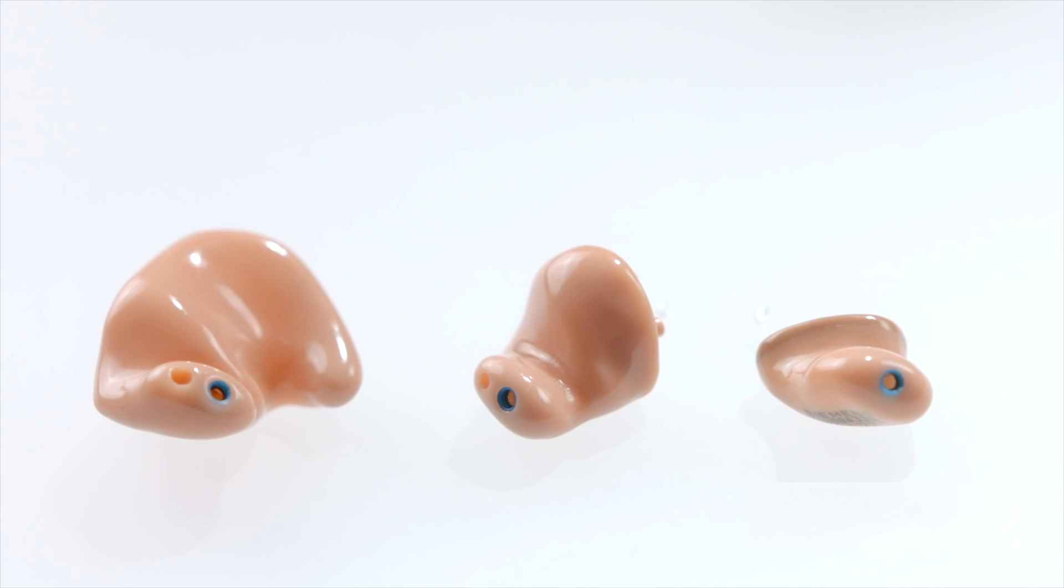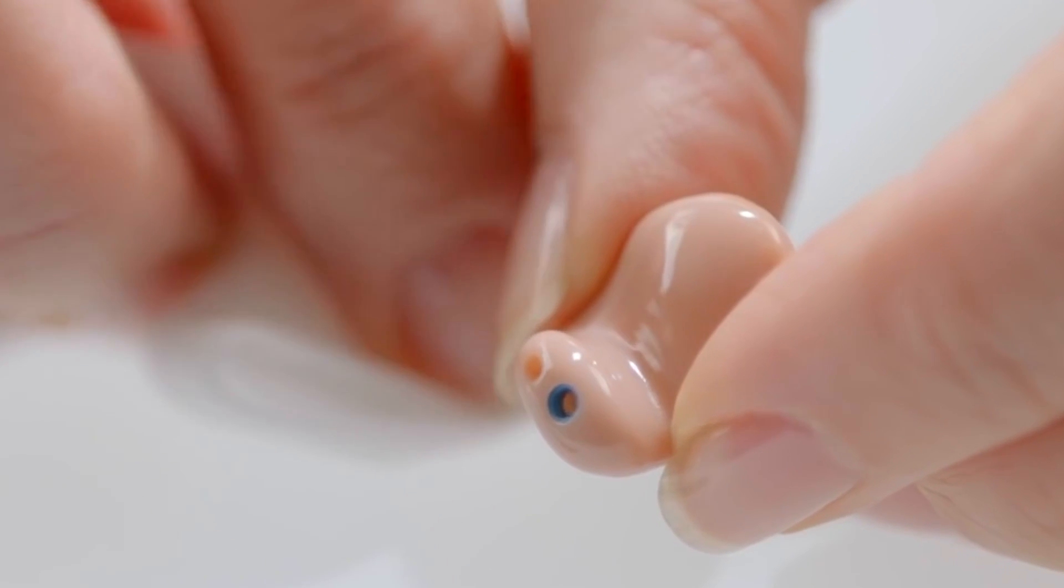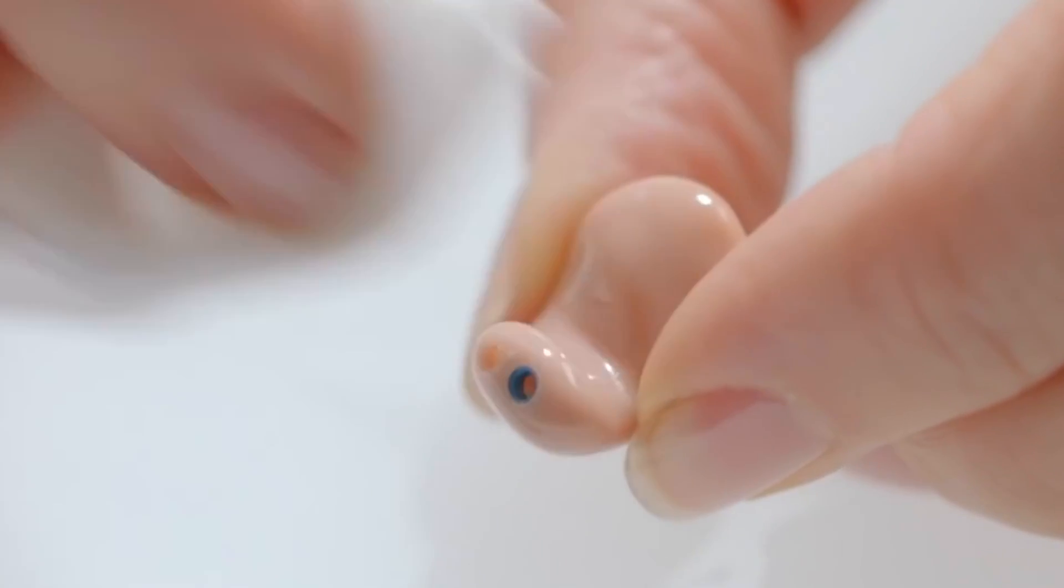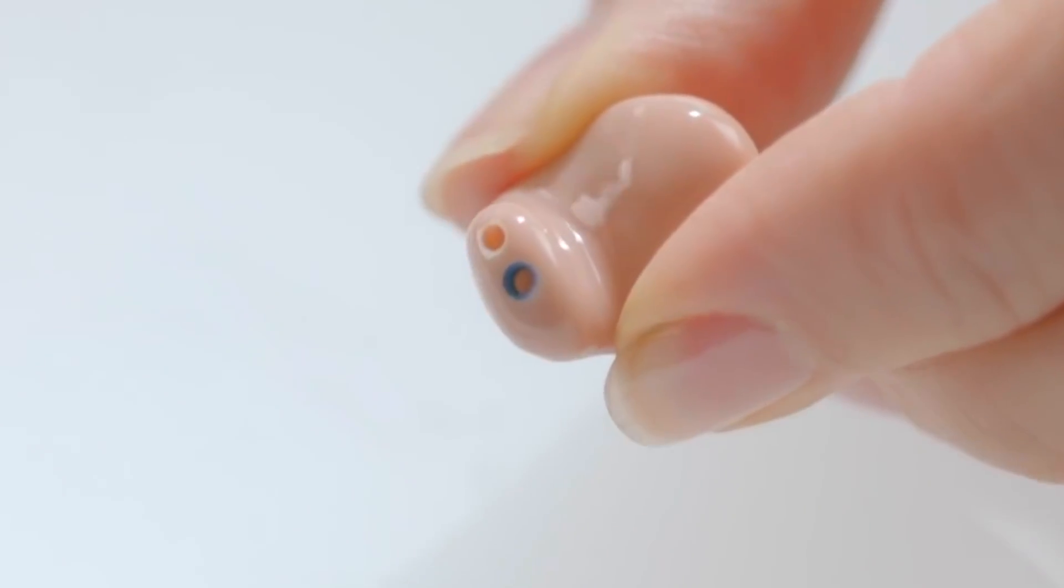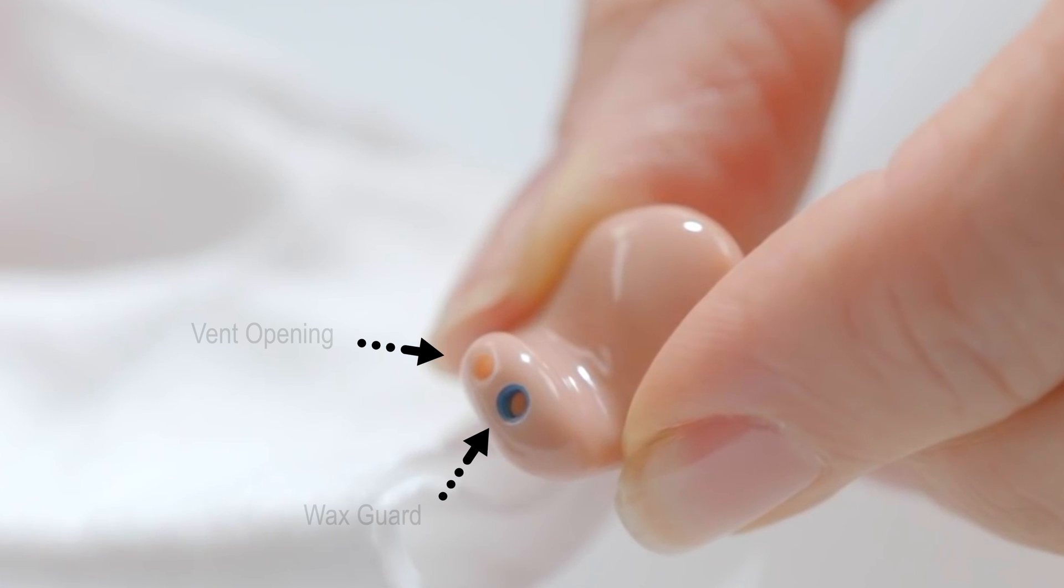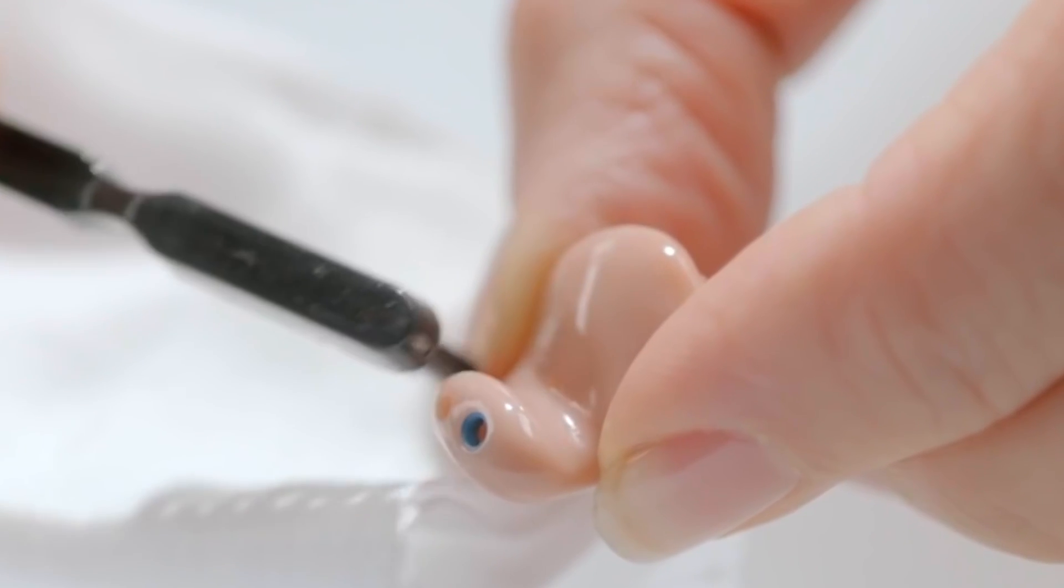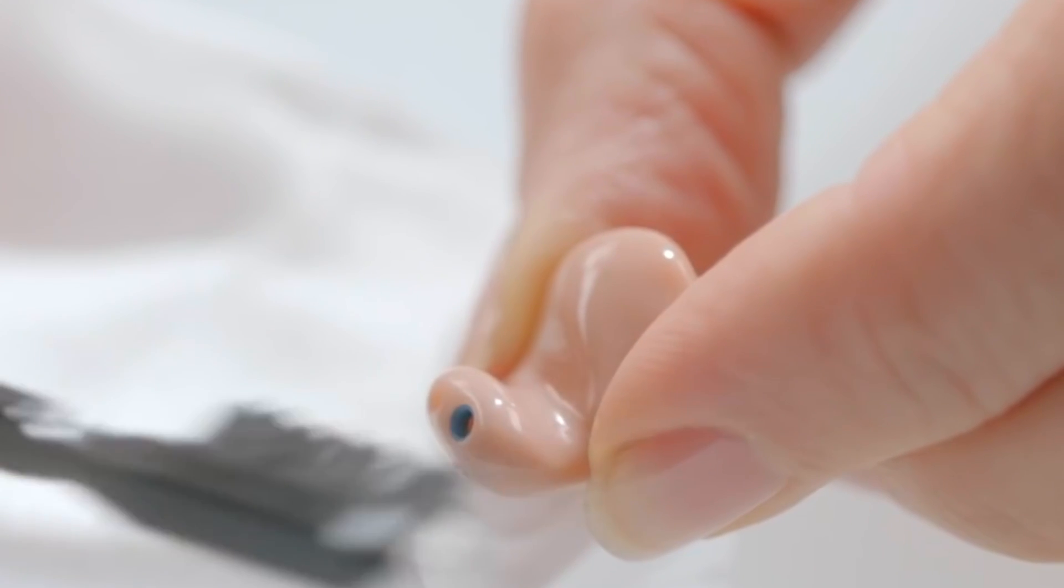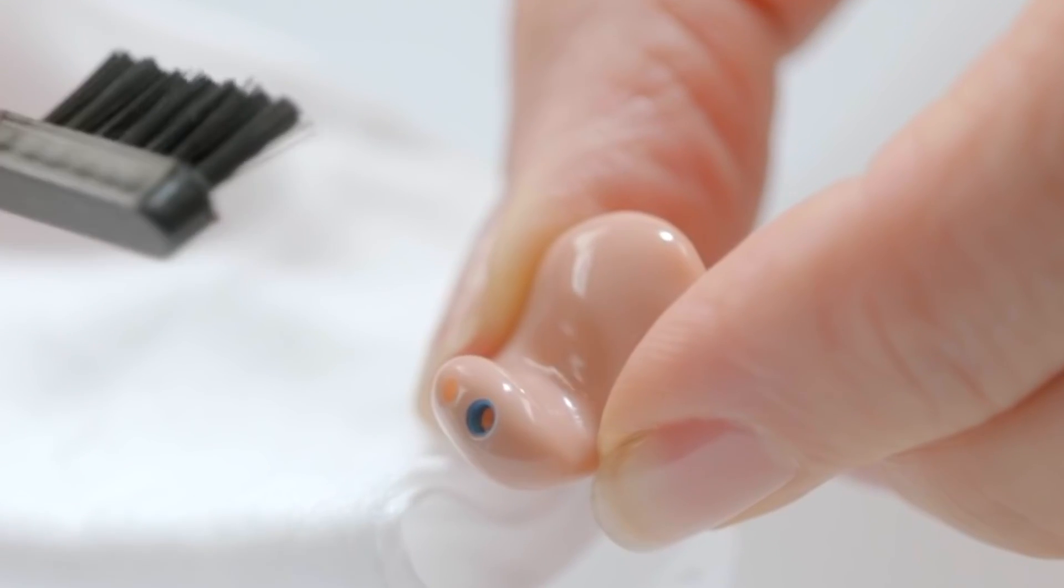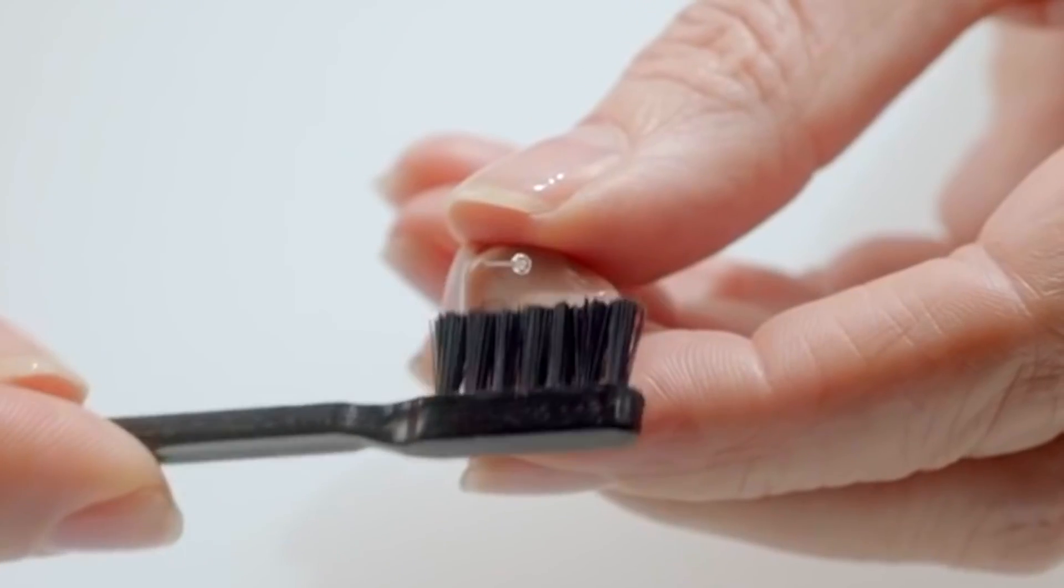For custom in-the-ear hearing aids, cleaning is similarly performed as for the behind-the-ear hearing aids. Wipe the outer casing with a dry microfiber cloth. More stubborn spots can be wiped away with a damp cloth. A brush can be used for particularly stubborn areas. Remove any earwax that may be blocking the microphone and vent openings with the brush as well.